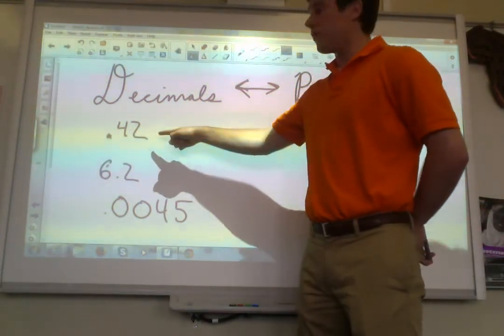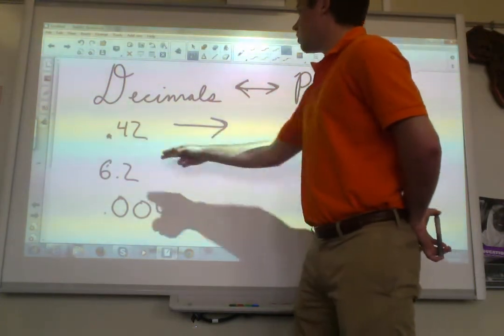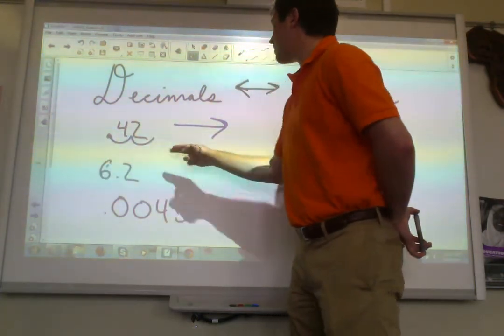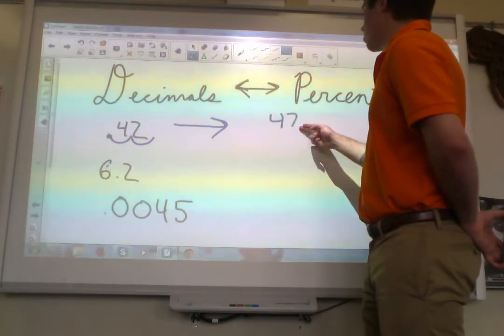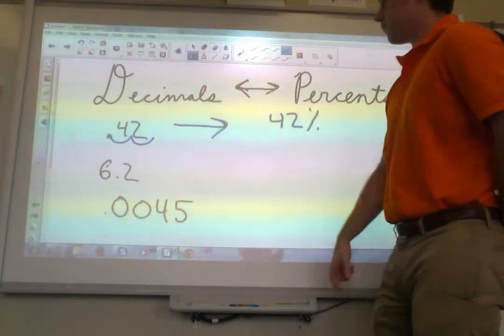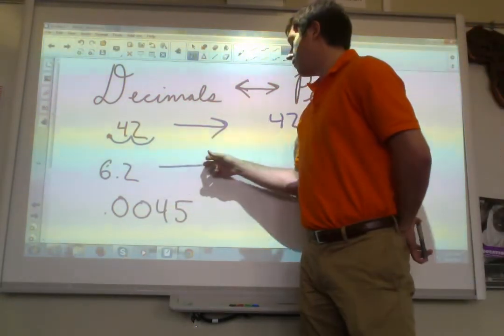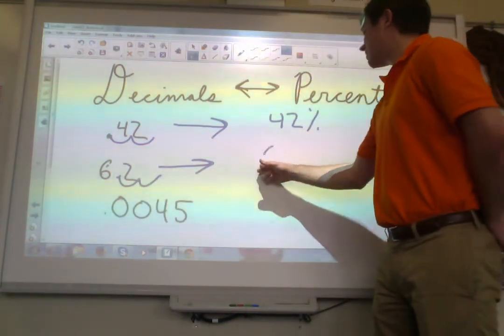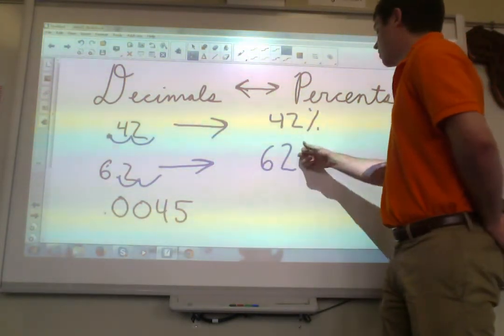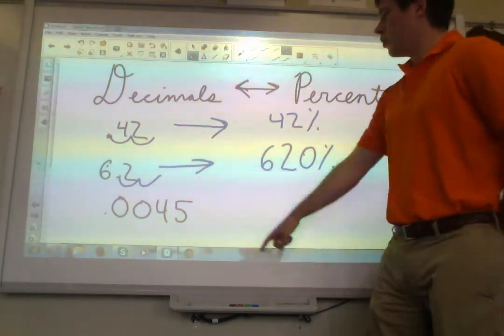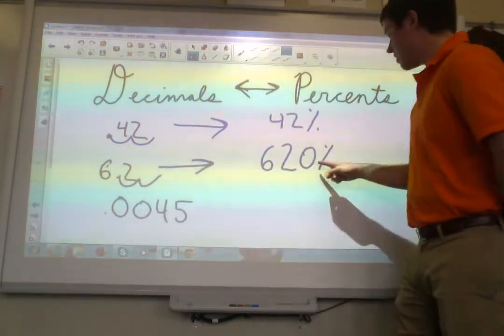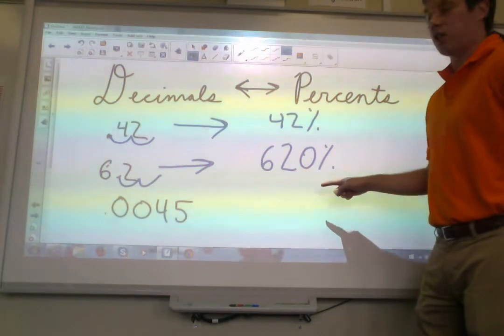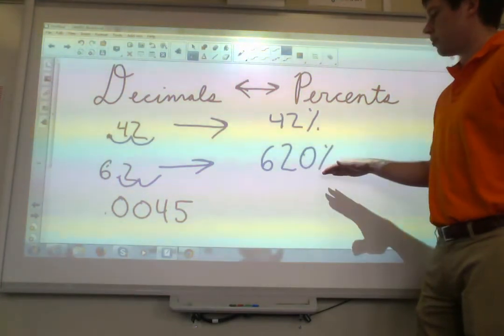0.42, our first example. If we're going to convert that over, you move that decimal two spots, and you get 42%. 6.2 here. Move that decimal two spots, and you end up getting 620%. Notice how we ran out of numbers here. So we had to add in an extra zero as a placeholder. So 620% here.